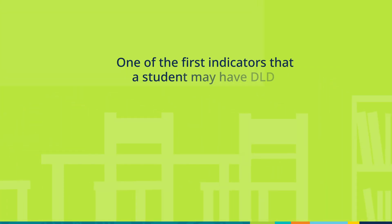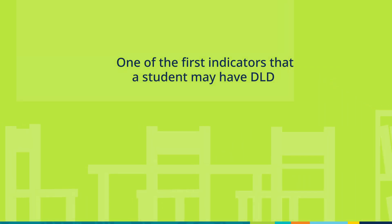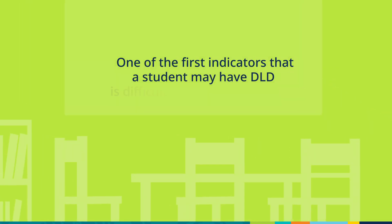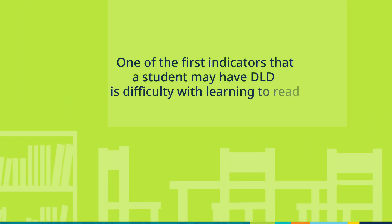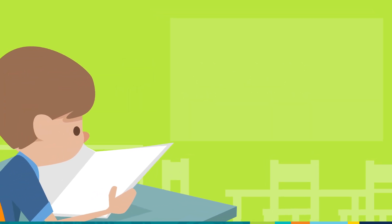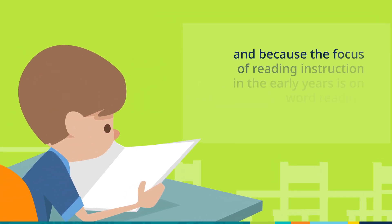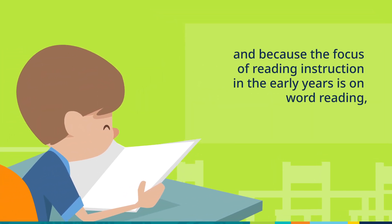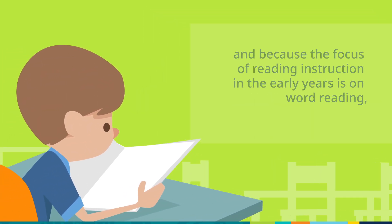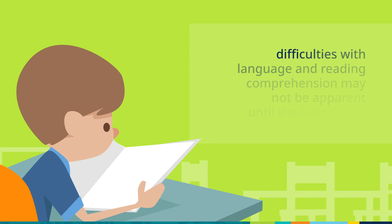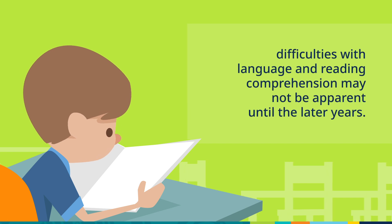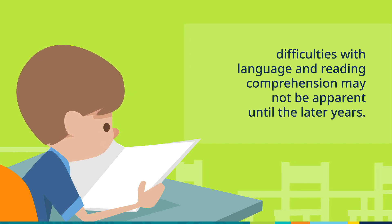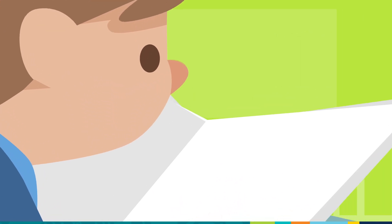One of the first indicators that a student may have DLD is difficulty with learning to read. And because the focus of reading instruction in the early years is on word reading, difficulties with language and reading comprehension may not be apparent until the later years.